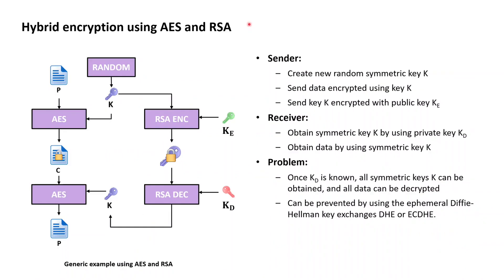As a short recap: symmetric encryption systems can encrypt arbitrarily large data at the cost of a large quadratic number of keys required, and asymmetric encryption systems solve this key-scaling limitation by just requiring one key per participant — however, at the cost of only being capable of encrypting a very small plaintext. The best of both worlds can be combined into a hybrid encryption scheme, where the prerequisite is simply that each participant — let's call her Alice — owns a public-private key pair, for example an RSA key pair.